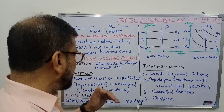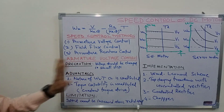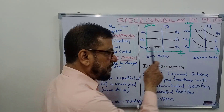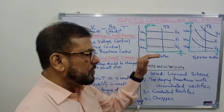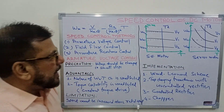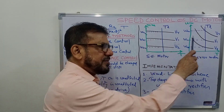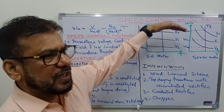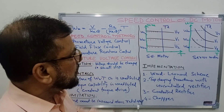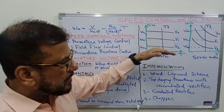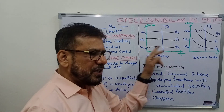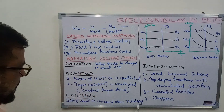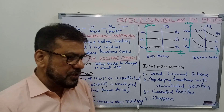The advantages of this method are as follows. First, the nature of the speed-torque characteristic is not affected. For example, if you are using a separately excited DC motor requiring good speed regulation, that characteristic is maintained. The change in speed from no load to full load remains the same as at rated voltage. So speed regulation is preserved — this is one advantage of armature voltage control.